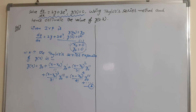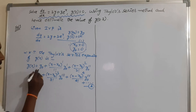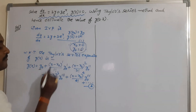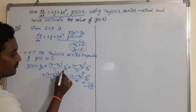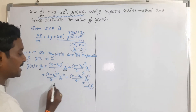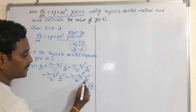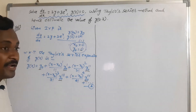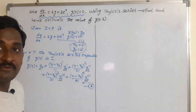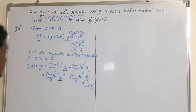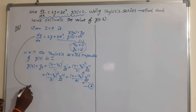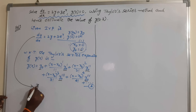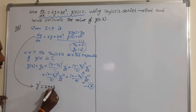Now we are going to find the values of y₀'. Already we know y₀ = 0. We have to find y₀', y₀'', y₀''', and y₀''''. In this method we have to find 3 or 4 derivatives of the given function. From the given problem, dy/dx can be written as y' = 2y + 3e^x.